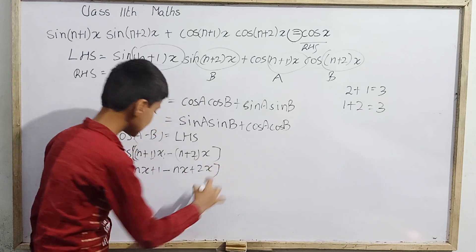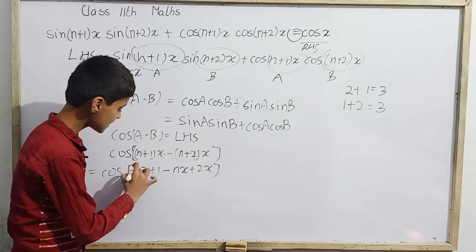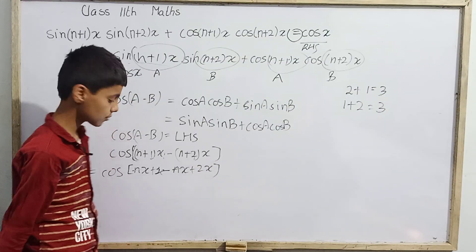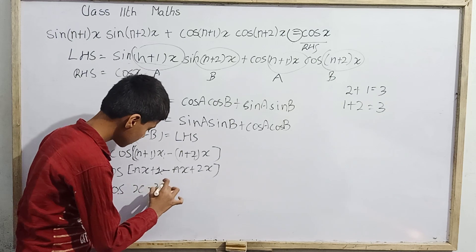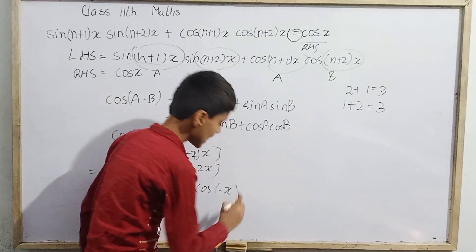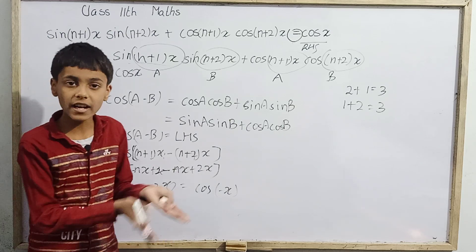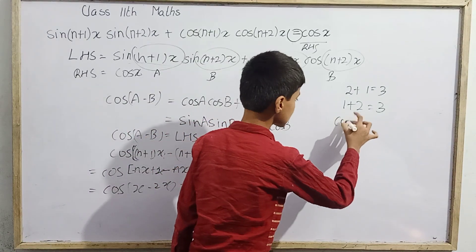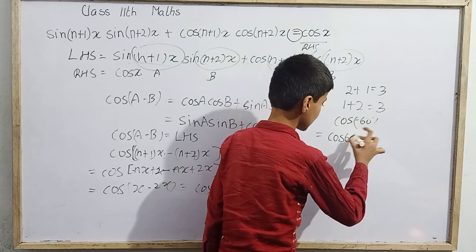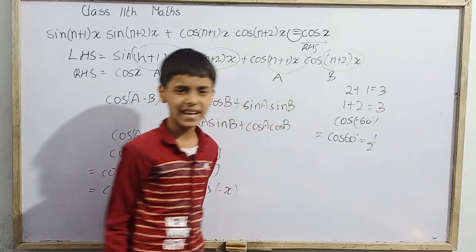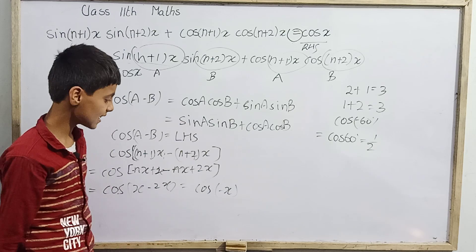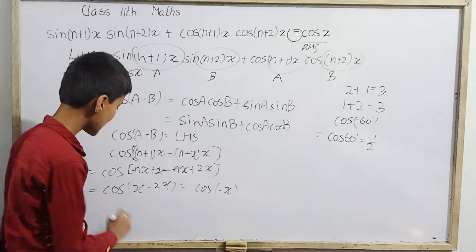After cancelling nx − nx, we are left with x − 2x, which is −x. So LHS = cos(−x). Since cosine is an even function — for example cos(−60°) = cos(60°) = 1/2 — we have cos(−x) = cos x.